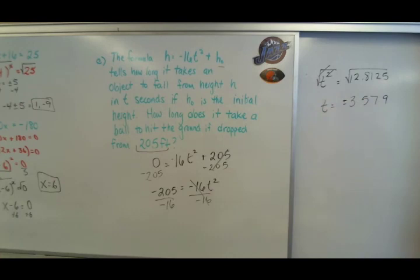And remember, you have that plus and minus. Now thinking in terms of context, the plus and minus doesn't make a lot of sense because we're talking time. So we're going to eliminate the plus minus because you can't have a negative time, and it would take 3.579, or about 3.58 seconds for that ball to hit the ground. All right, so that's dealing with perfect squares. If you have any questions, please contact me online, and good luck with your work.